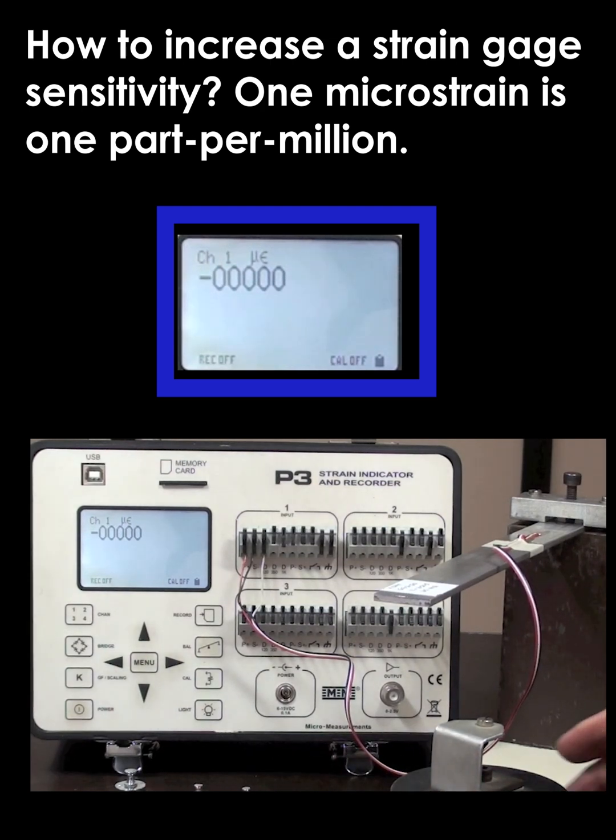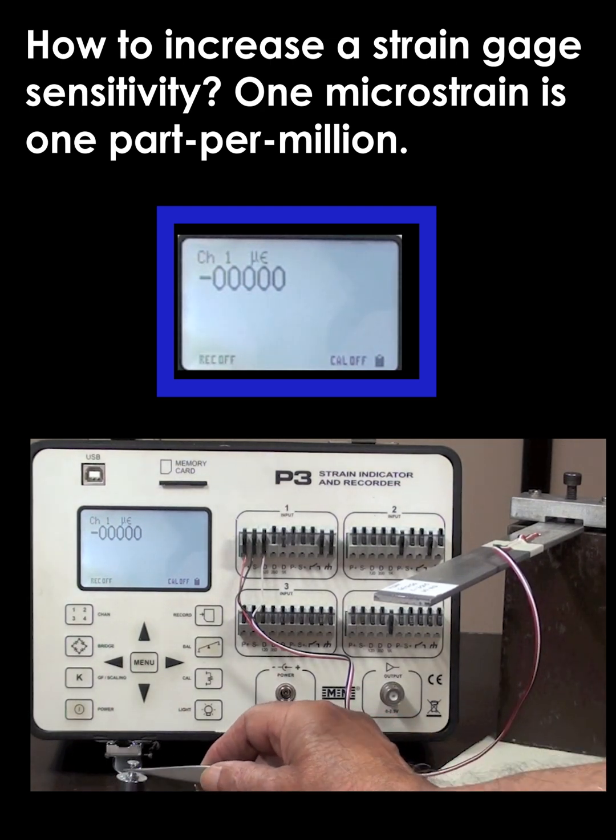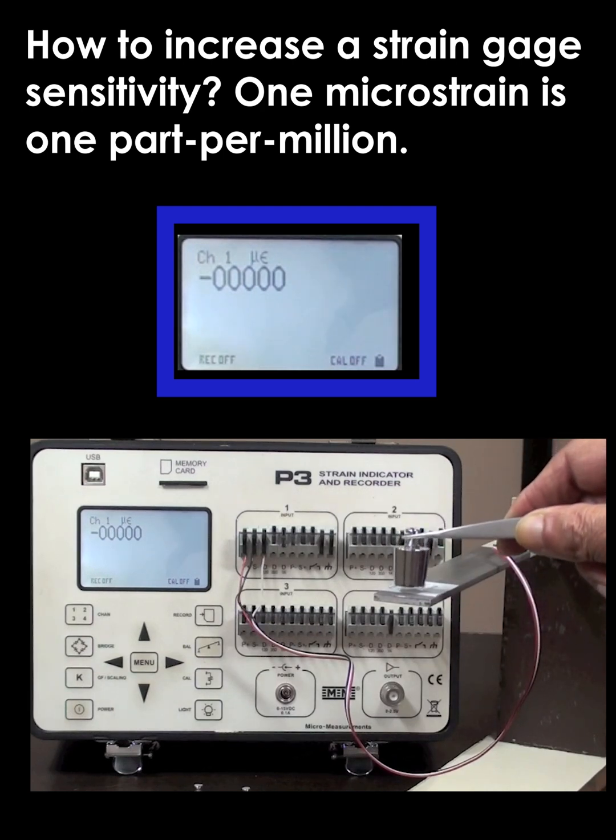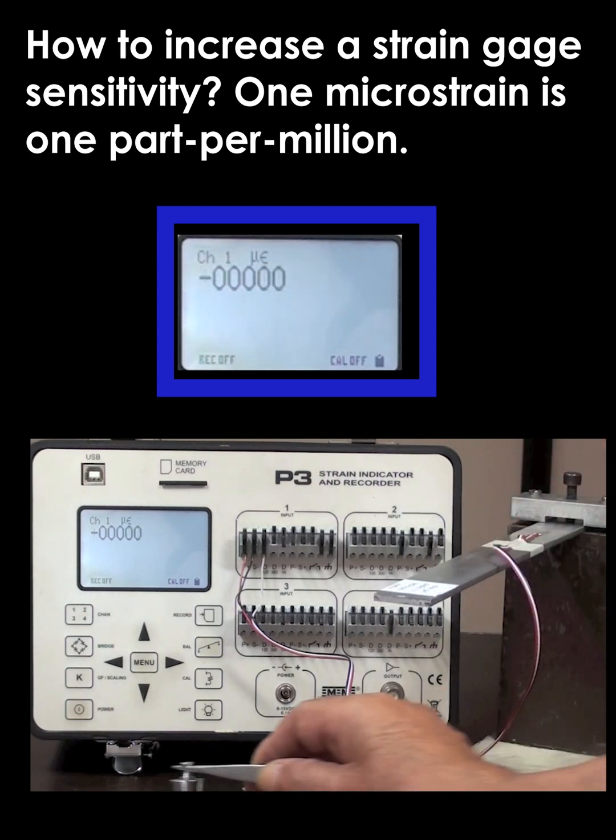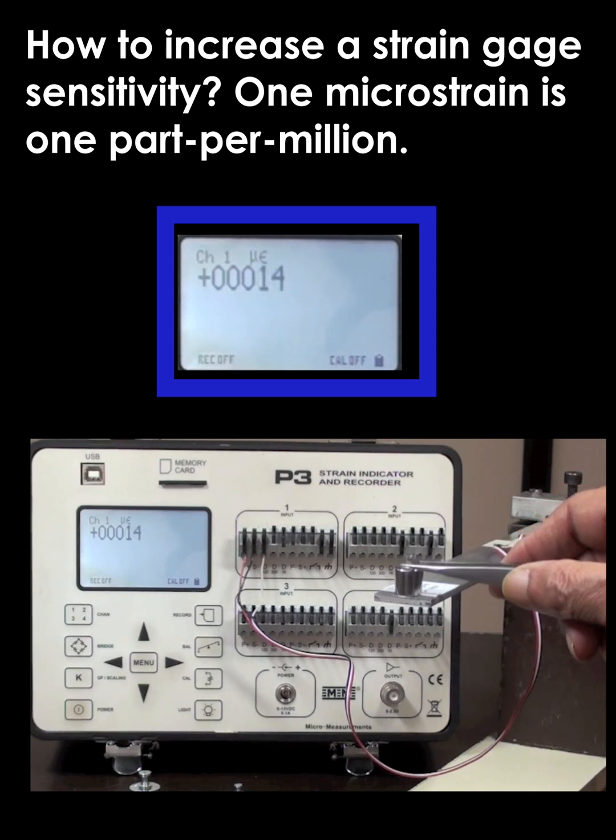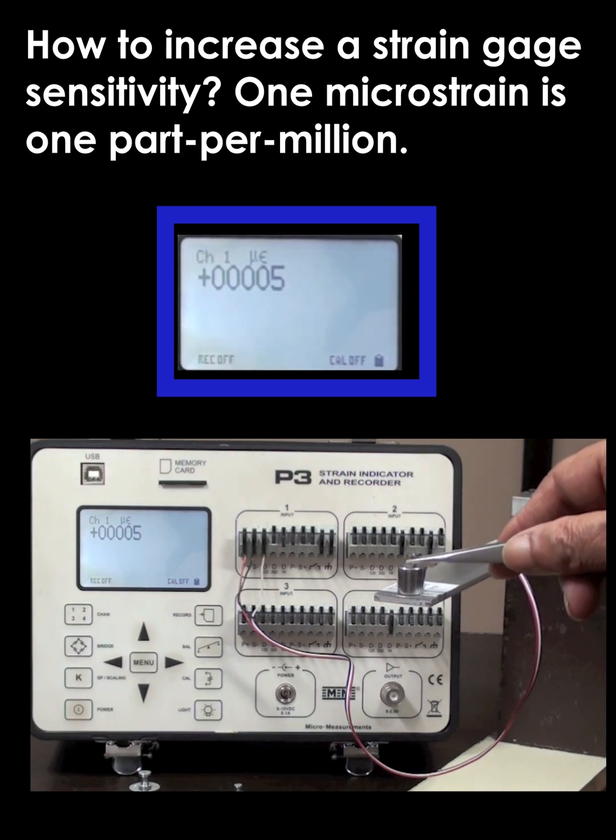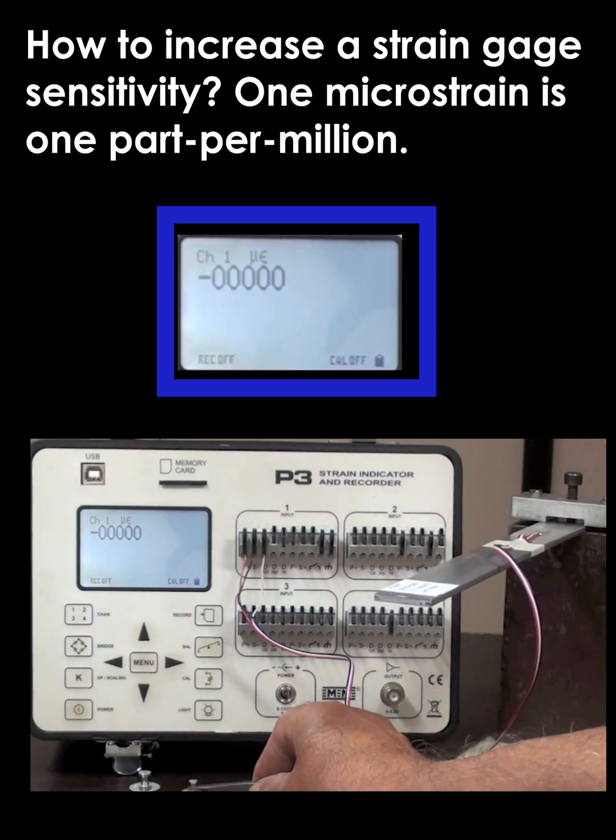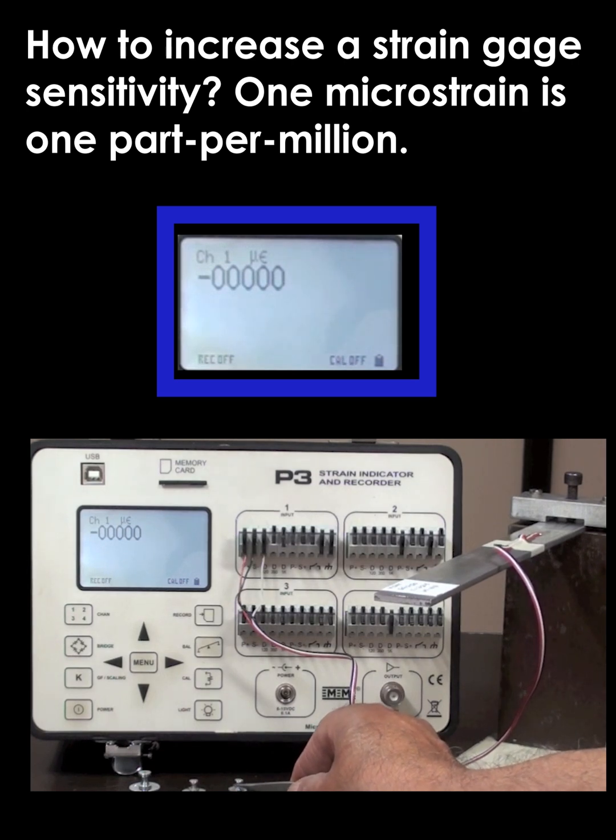We take a 20 gram weight, put it on the end of it, and that's generating right at 11 microstrain. A 10 gram weight would generate about five and a half, and now we're running into the resolution of the box.